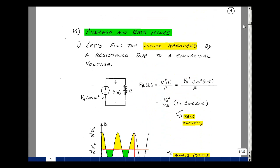I next wanted to find the average and RMS value of a waveform. To do that, let me find the power absorbed by a resistance due to a sinusoidal voltage. Take a voltage that's equal to v sub a times the cosine of omega t, and put a resistor across it. The power dissipated in this resistor is going to be v squared over R. We're going to square this, so we'll get v sub a squared and the cosine squared of omega t, divided by R.